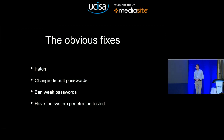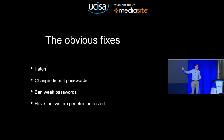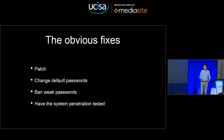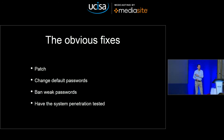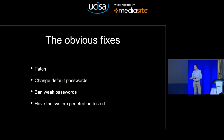What are some fixes? Patch, change default passwords, ban weak passwords, have the system penetration tested. Those basics keep out the riffraff — protecting you against automated attacks, crypto lockers, and WannaCry-type worms. Have the system pen tested if you've written any custom code. We now use internal audit time to get pen testing done instead of having auditors look at our Microsoft AD. We get about 15 days of pen testing essentially for free because it comes out of the audit budget. Highly recommended.